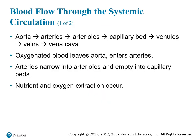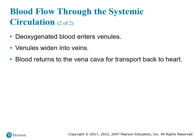Blood flow through the systemic circulation follows this path: aorta → arteries → arterioles → capillary beds → venules → veins → vena cava. Oxygenated blood leaves the aorta into arteries, which narrow into arterioles and empty into capillary beds. Nutrient and oxygen extraction occurs here — the body pulls out everything it needs from food, medications, and other substances. Deoxygenated blood then enters venules, which widen into veins, and blood returns to the vena cava and back to the heart.